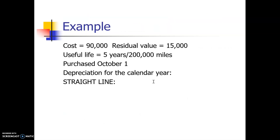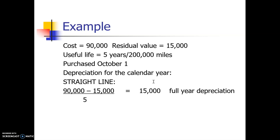Here we have a truck that costs $90,000, residual value $15,000, useful life five years — but we bought it on October 1st, not January 1st. So we can only take depreciation for October, November, and December — only three months. We calculate a full year of depreciation: $90,000 minus $15,000 gives a depreciable cost of $75,000, divided by the five-year life equals $15,000. Multiplying by 3/12 gives $3,750 depreciation in year one.